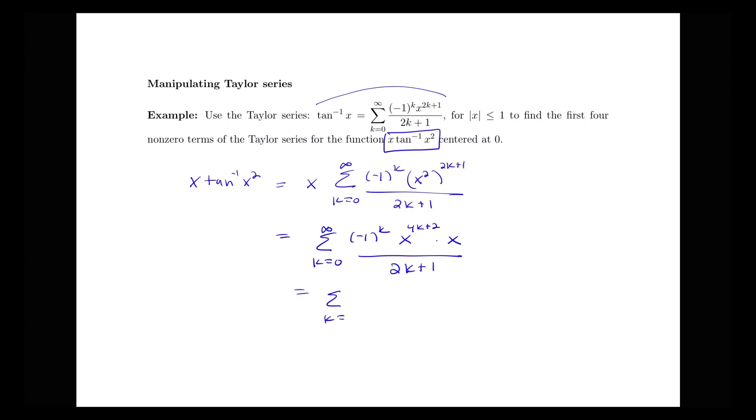So we see this is going to be our sum from k equals 0 to infinity, negative 1 to the k, x to the 4k plus 3, all over 2k plus 1.